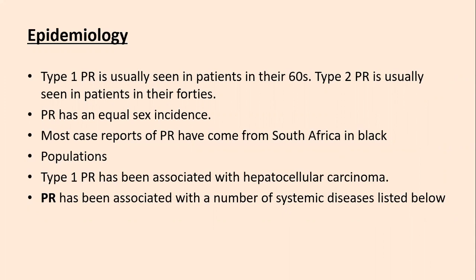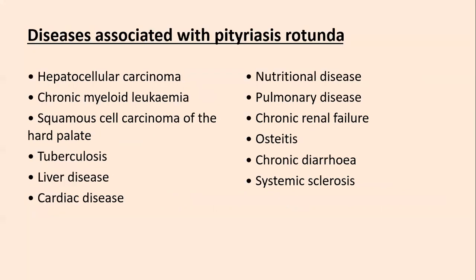Pityriasis rotunda has an abnormal sex incidence; most case reports have come from South Africa in Black populations. Type 1 has been associated with hepatocellular carcinoma, and pityriasis rotunda has been associated with numerous systemic diseases including: hepatocellular carcinoma, chronic myeloid leukemia, squamous cell carcinoma, granulomatous diseases like tuberculosis and liver sarcoidosis, liver disease, cardiac disease, nutritional disease, pulmonary disease, chronic renal failure, osteitis, chronic diarrhea, and systemic sclerosis.